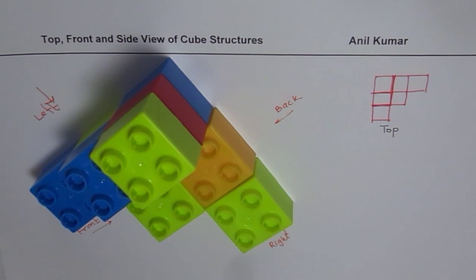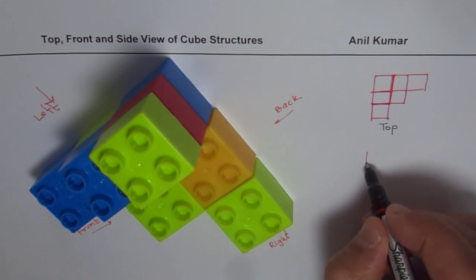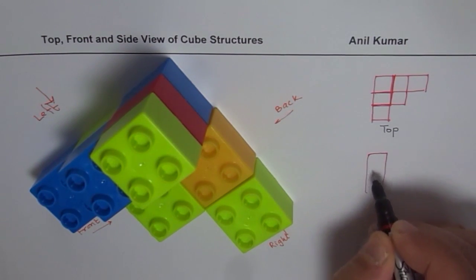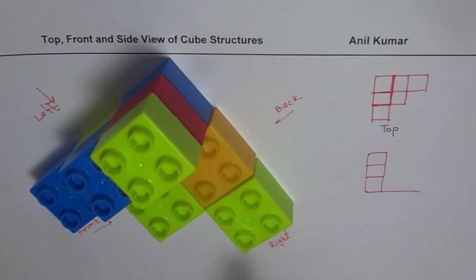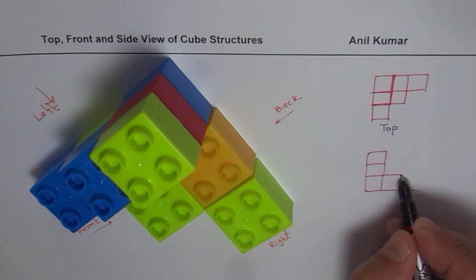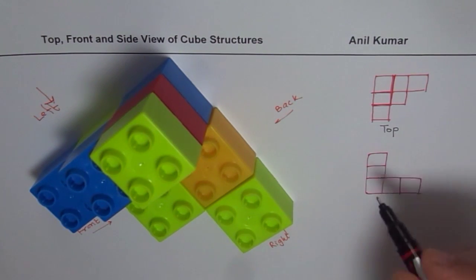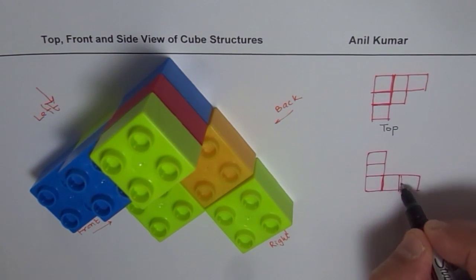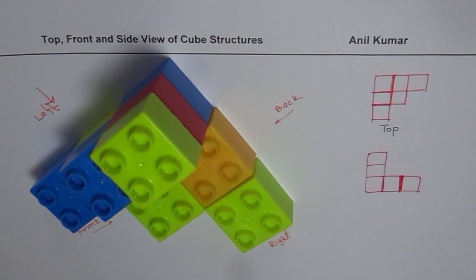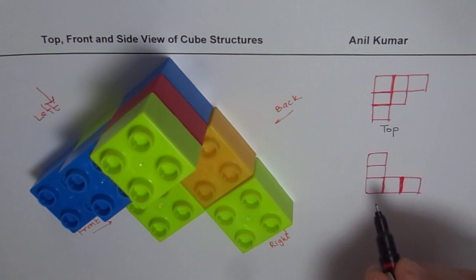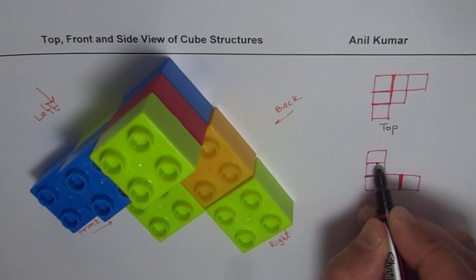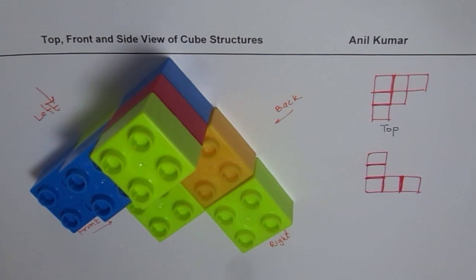Now let's talk about the front view. What you see here is three layers — three layers on the very first column. Horizontally also you see three layers. So this is the left side with three blocks one over the other, and from here you see one, two, and three. But we have to show the depth — you can see there is a depth here and here also. This depth will be indicated by making these two lines bold. These steps from the front will be indicated by making them bold, and that completes our front view.